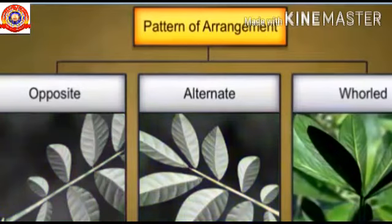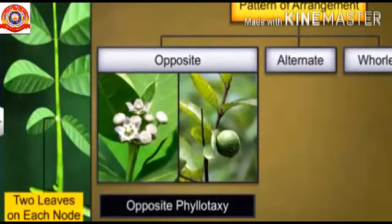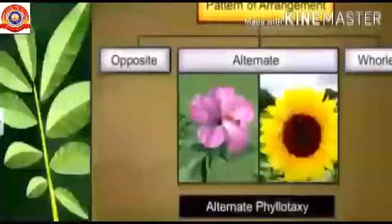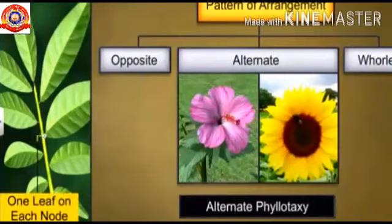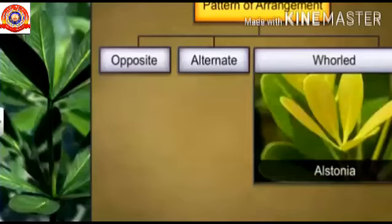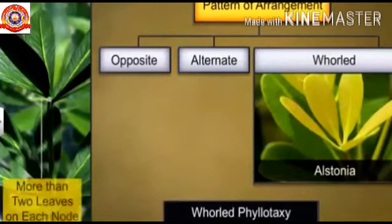In opposite phyllotaxy, there are two leaves at one node arranged opposite to each other. You can see this type in calotropes and guava. In alternate phyllotaxy, only one leaf arises at each node and the leaf at the next node is in the opposite direction; this is commonly seen in hibiscus and sunflower. In whorled phyllotaxy, two or more leaves appear at a node forming a whorl, as in Alstonia, commonly called devil's tree.